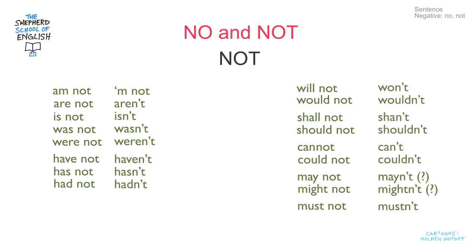How about the thousands of times we don't have one of these verbs in a negative sentence? What can we do? Well, we use do, does and did. I've already made a video about that and here's the link.